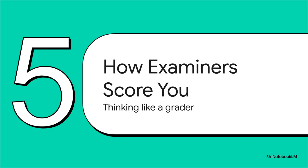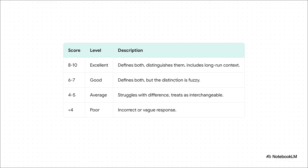Let's pull back the curtain a bit. What exactly separates a decent answer from an excellent one? If you just define the two terms, you're probably landing in the average zone, maybe four or five points. You get into the good range — say six or seven — when you correctly define them but also try to explain the distinction, even if it's a little fuzzy. But what gets you into that excellent eight to ten territory? It's nailing that distinction and adding that final crucial detail: the long-run context. That tiny addition signals that you've really mastered the concept.